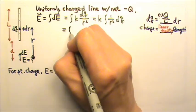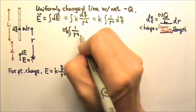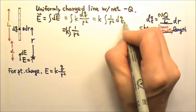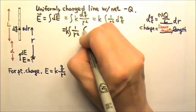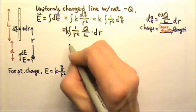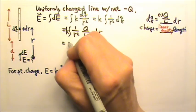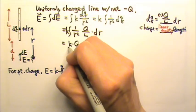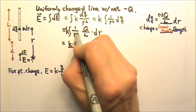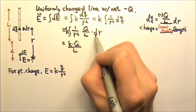So now I can replace the dQ with that. So I have the integral of k, and then 1 over r squared, and I'm going to replace dQ with q over L times dr. Now, of course, q over L is constant. We can take it out. So I have k times q over L, and then the integral of 1 over r squared dr.